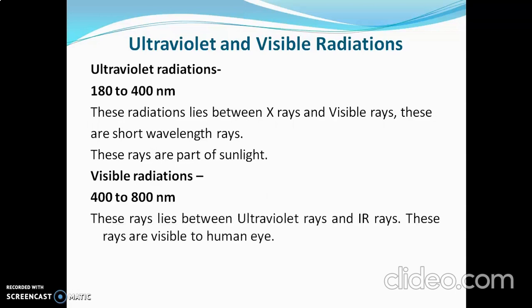UV radiations are part of sunlight. Visible radiations have a range of 400 to 800 nanometers. They lie between ultraviolet and IR radiations on the electromagnetic spectrum. These radiations are visible to the human eye, unlike X-rays, cosmic rays, gamma rays, IR, UV, or radio waves.